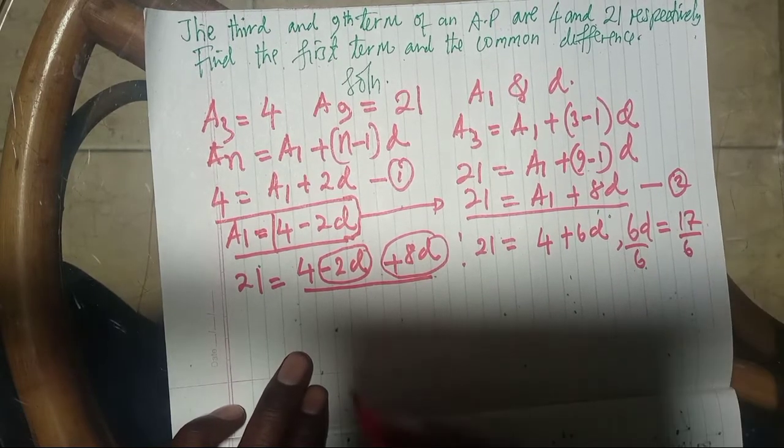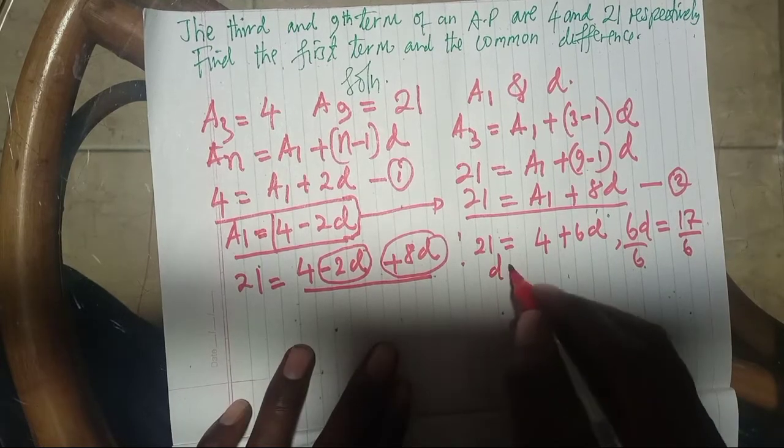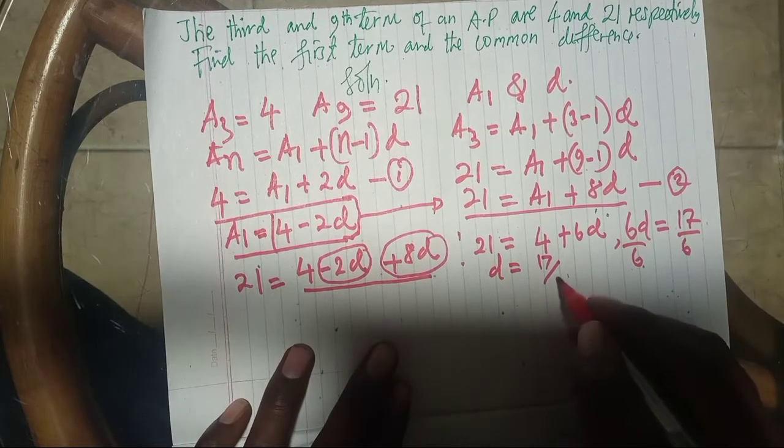Therefore, we divide by 6. Therefore, our D is equal to 17 over 6.